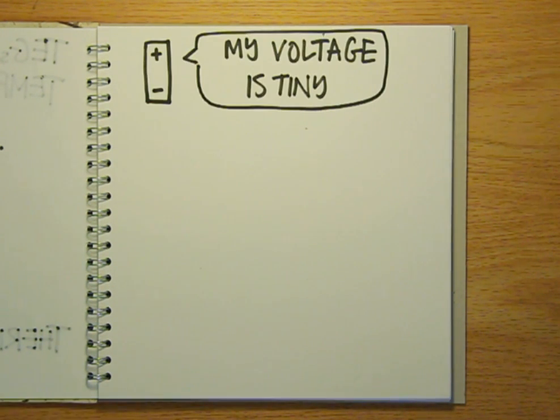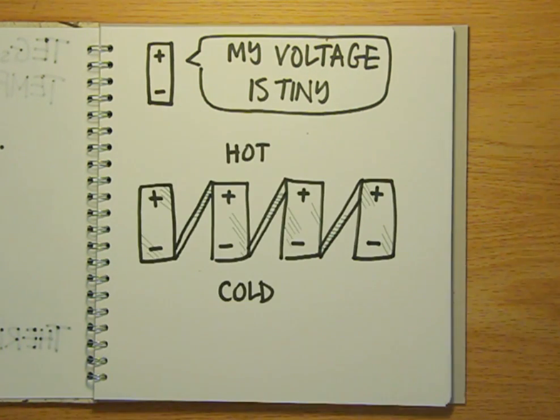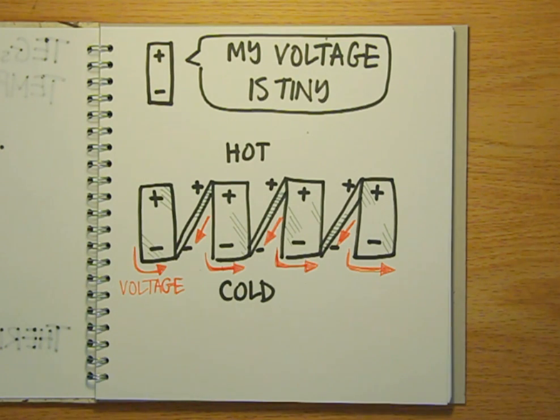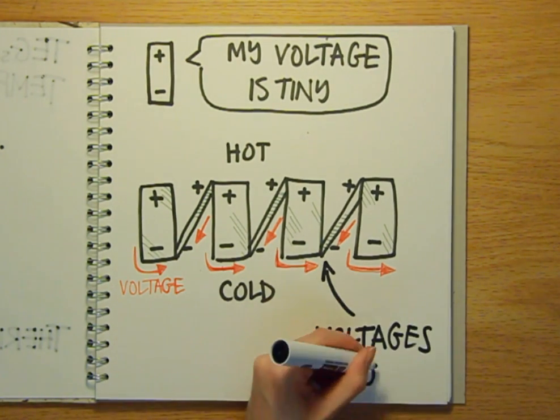So it sounds simple, but one big problem is that the voltage produced is absolutely tiny. And this can't just be solved by connecting lots of pieces of metal together in series like you would to make a bigger battery, because the wires used to connect them, which are also pieces of metal, will produce a voltage in the wrong direction and oppose the voltages in the pieces of metal.